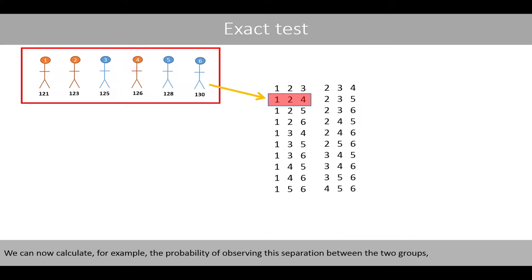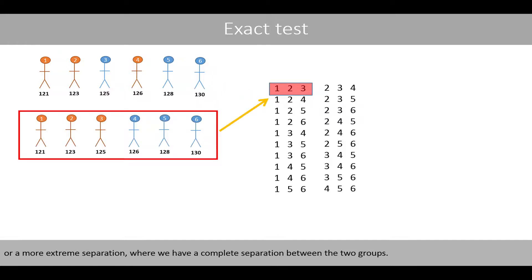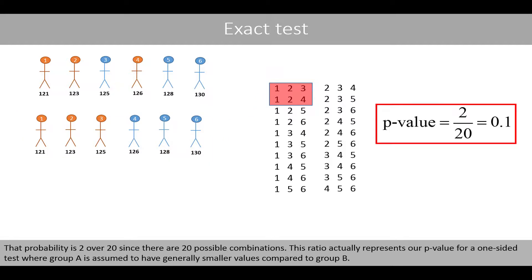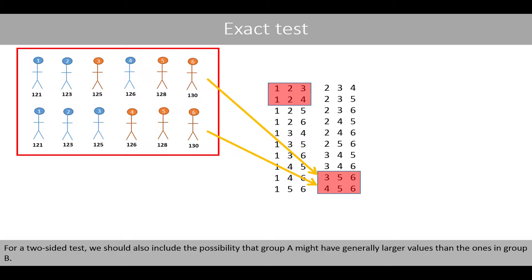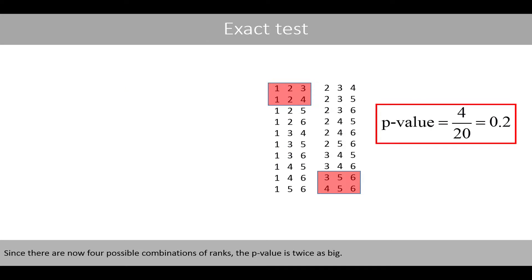We can now calculate the probability of observing a given separation between the two groups, or a more extreme separation with complete separation between groups. That probability is 2 over 20, since there are 20 possible combinations. This ratio represents our p-value for a one-sided test, where group A is assumed to have generally smaller values compared to group B. For a two-sided test, we should also include the possibility that group A might have generally larger values than those in group B. Since there are now four possible combinations of ranks, the p-value is twice as big.